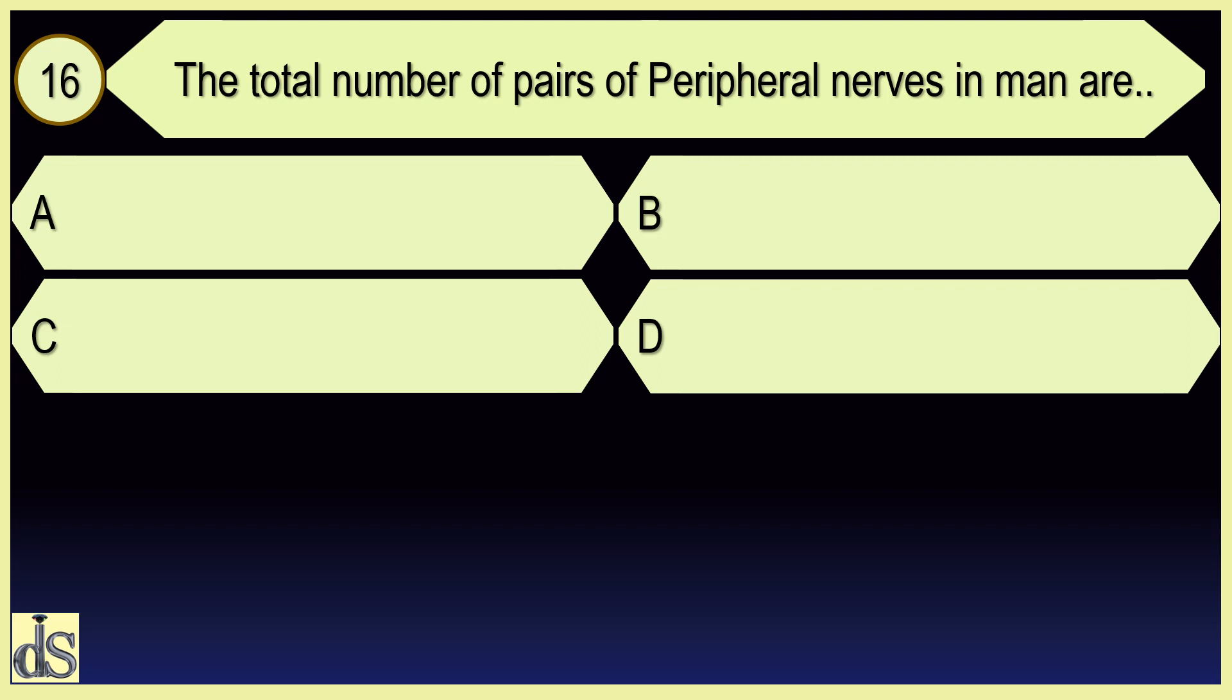The total number of pairs of peripheral nerves in man are 43.